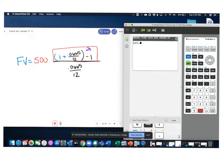So I'll do 1 plus 0.0665, divide it by 12, close the parentheses, and I'll get this value here.